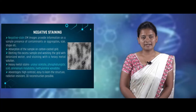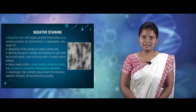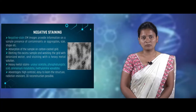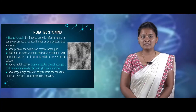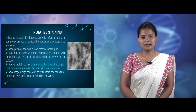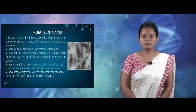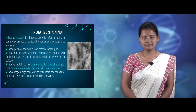The next step in cryo electron microscopy is negative staining. Negative staining is done to get information about the presence of aggregates or contaminants, and the size and shape of the molecule. In this step, absorption of the samples is done using carbon grids, then the samples are blotted to remove excess sample, washed using deionized water, and stained using heavy metals. The heavy metals used are ammonium molybdate, phosphotungstic acid, and methylamine vanadate.